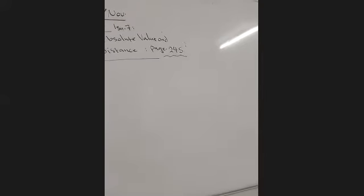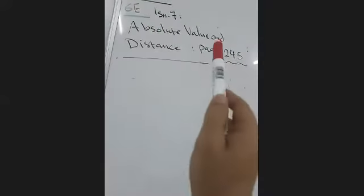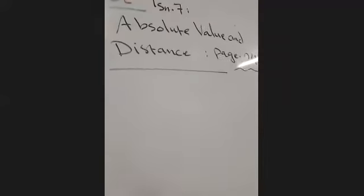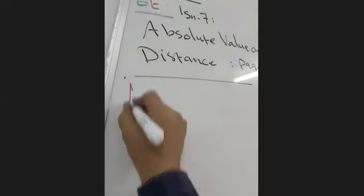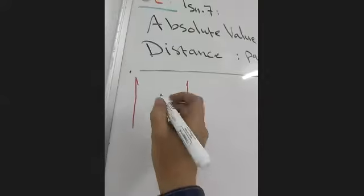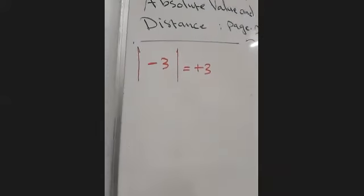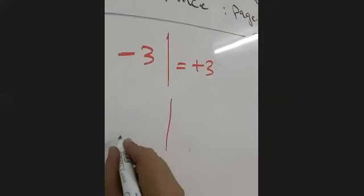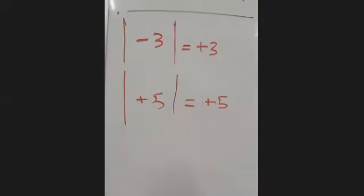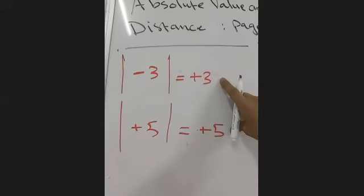Today we will talk about absolute value and distance. We have two parts: absolute value and distance. We took absolute value before — the symbol is these two lines, and inside is the number. If the number inside the absolute value is negative, it will always be positive. And if the number is positive, it stays positive.